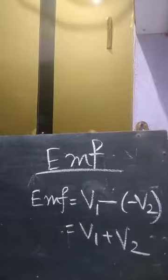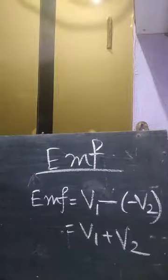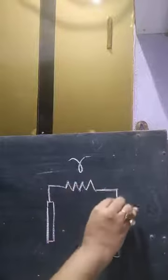Internal resistance is the resistance offered by the electrolyte and the electrodes when current flows. In general, if we represent internal resistance as small r, consider a cell where two electrolytes are connected by an external resistance capital R. Suppose this is one cell and this is another — with cathode and anode connected by the external resistance R.